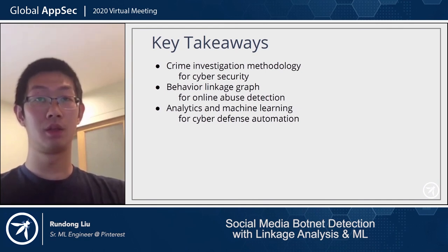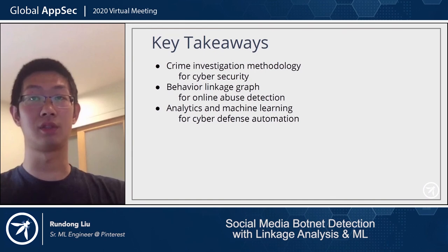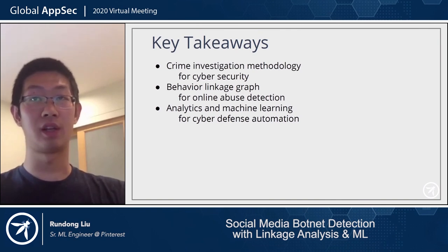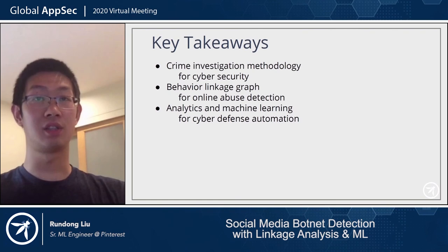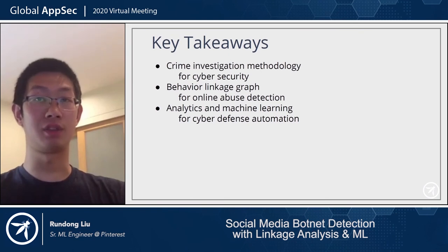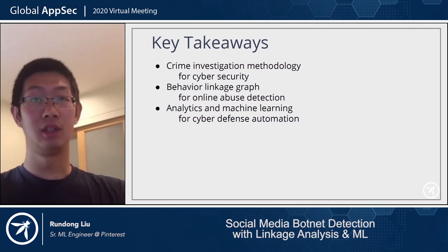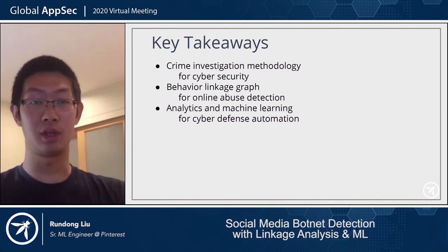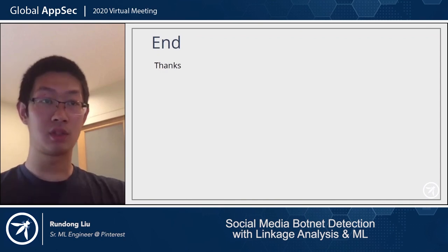Key takeaways from this talk: we adopted several crime investigation strategies for cybersecurity defense — intuitive because cybercrime is a crime as well. We leveraged behavior analysis to build linkage graphs and used graph learning for spam detection. This method is behavior-based and content-agnostic, enabling quick identification of new attack patterns in the wild. The same method would also apply to other online fraud detection, like money laundering detection or distributed denial-of-service detection. Data science and machine learning are great tools for automated cyber defense and will generate a bigger impact for the security industry in the future.